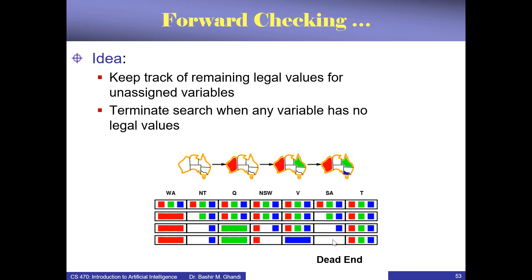Now suppose we assign blue to Victoria. We have to go to all neighboring states and remove blue. Unfortunately, South Australia had only blue left — so it becomes empty. We can see ahead that assigning blue to Victoria leads to a dead end, because when we come to South Australia we will have no color to assign. This is the idea of forward checking — it helps you look ahead and see potential problems, then backtrack immediately rather than waiting until you actually reach South Australia.